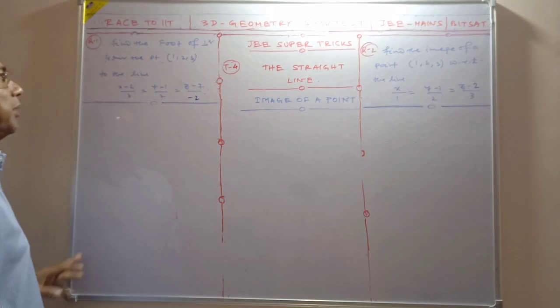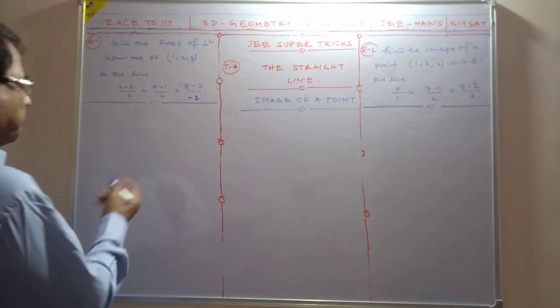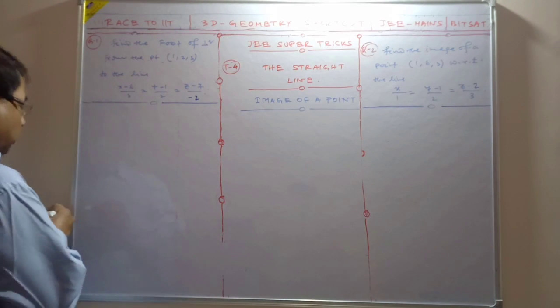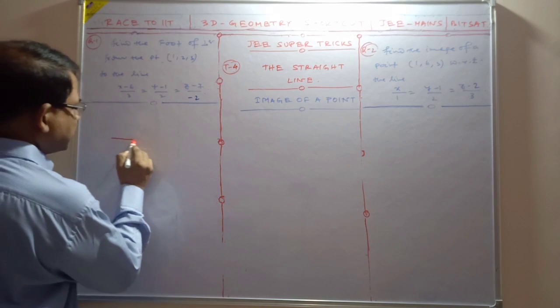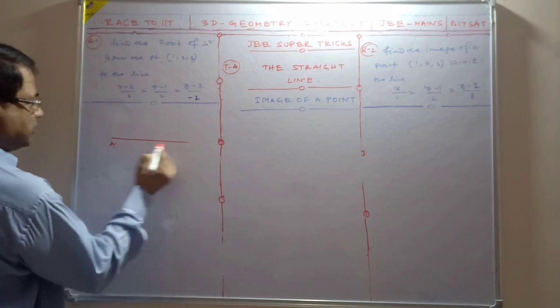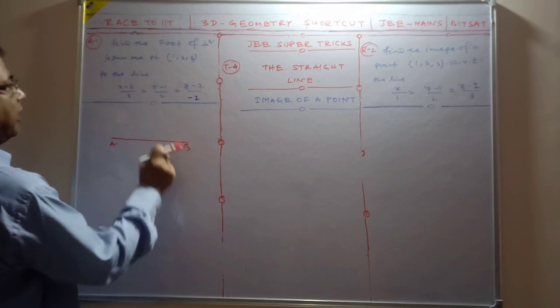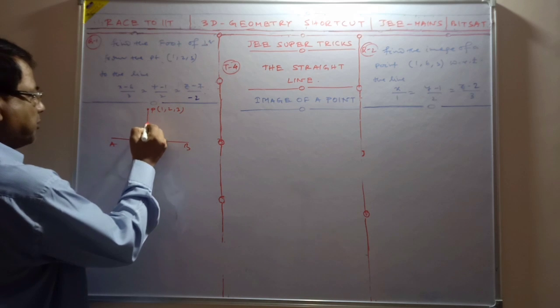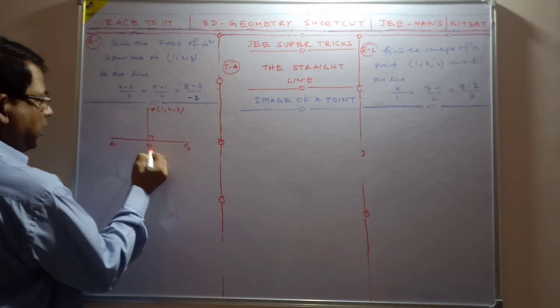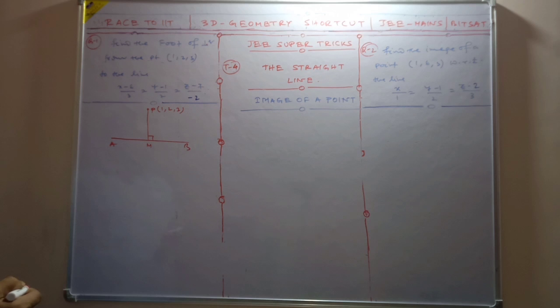Let me explain foot of perpendicular. Suppose this is a straight line and this is a point. From this point you have to drop a perpendicular to the line, and you need to find the M point coordinate.